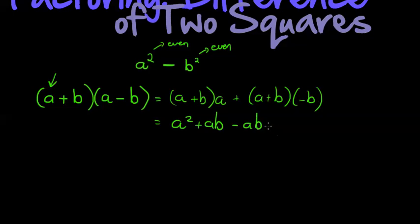Then the b times negative b is negative b squared. Now you can see why this becomes only two terms—because the middle terms here cancel one another out. If I own ab and then I owe ab, I end up having no ab's left.